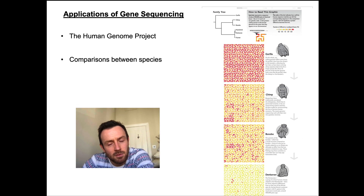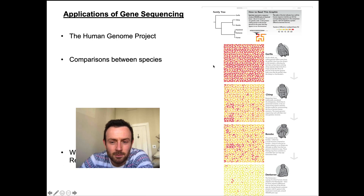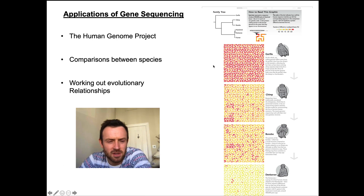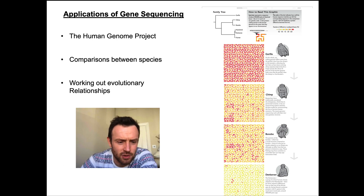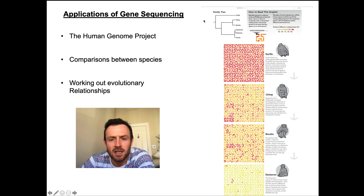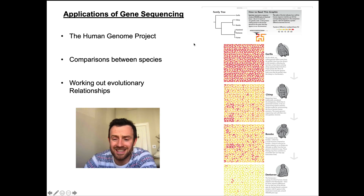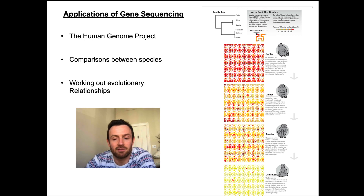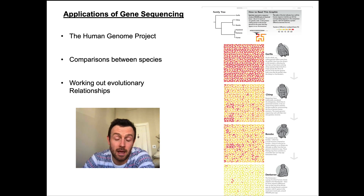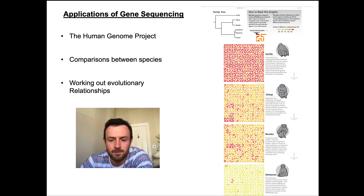Comparing between species also helps us work out evolutionary relationships — this is called phylogenetics, which you will have learned about in year 12. Phylogenetics involves working out evolutionary relationships through molecular evidence such as the DNA sequence.